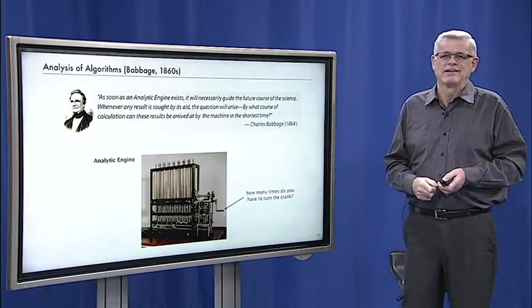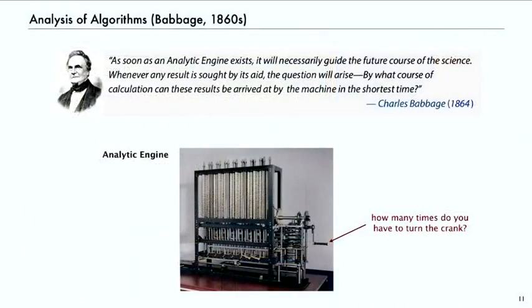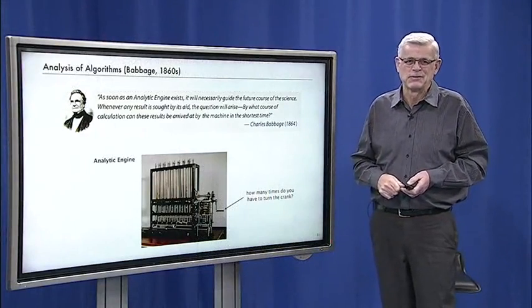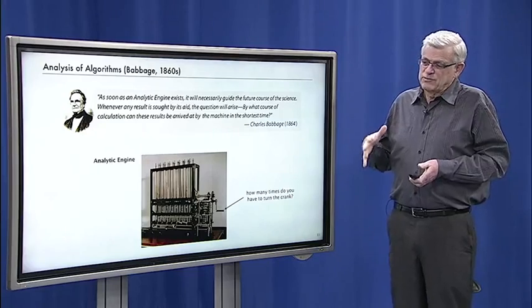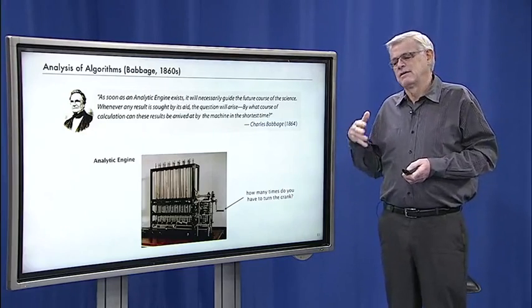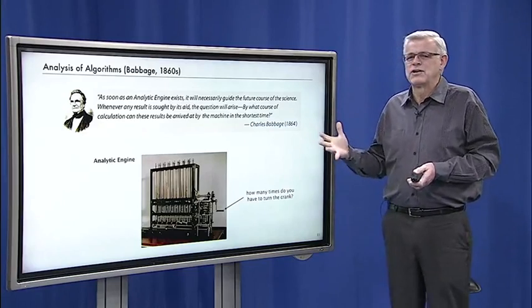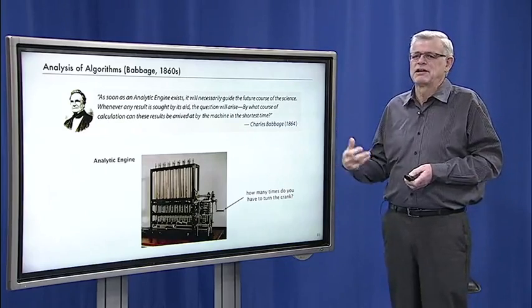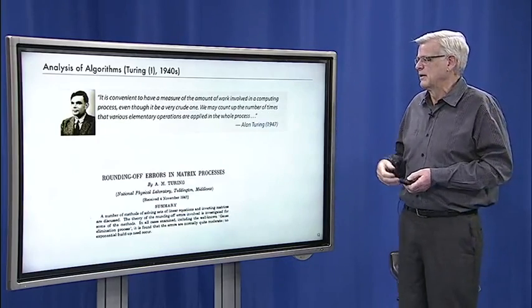And you can see why it was important to Babbage. This thing actually had a crank, and the only way that it could compute things was by somebody turning the crank. Obviously, you want to minimize the number of times that you need to turn the crank. And computers were expensive and slow and used energy and so forth, so minimizing the cost of computation was always very important.